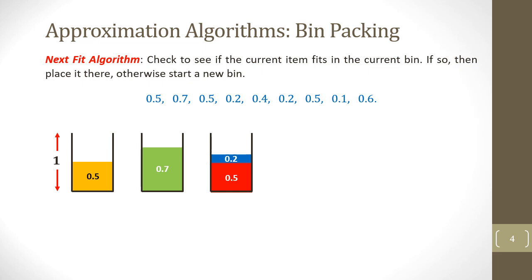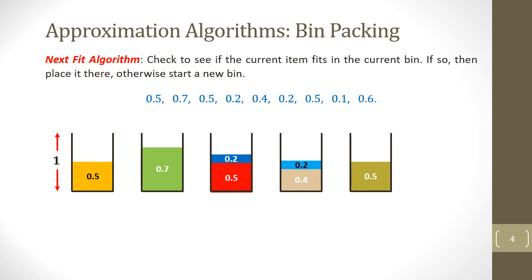0.4 will go to a new bin, and 0.2 will also go into the fourth bin. The seventh item of size 0.5 will go to the fifth bin, followed by the item of size 0.1. Then the last item of size 0.6 will be placed in the sixth bin. So we require a total of six bins if we apply the Next Fit algorithm to this problem.